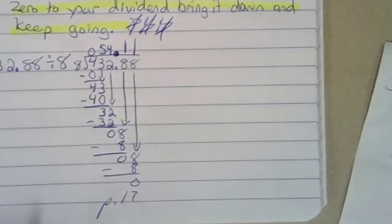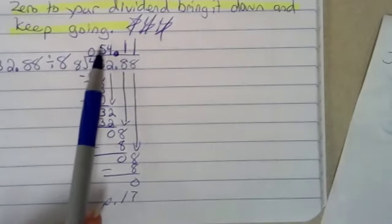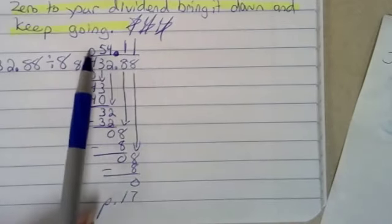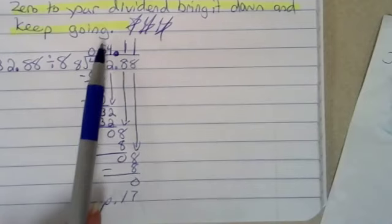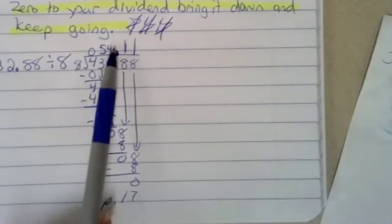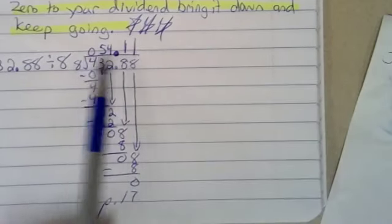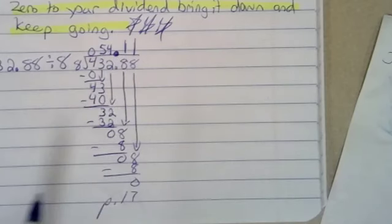And I don't have a remainder, so I did it correctly, 54 and 11 hundredths. It is super important where you put your digits that you line everything up. My 0 is above my 4, my 5 is above my 3, my 4 is above my 2, my decimals above my decimal, and my 1s are above my 8s. Because if you don't line everything up, then that decimal is going to be in a different spot and it's going to give you a wrong answer. Alright, so that one we didn't have a remainder for. We didn't have to add a 0 and keep going, we didn't have a remainder. Let's look at the next one.